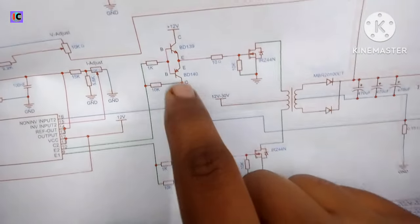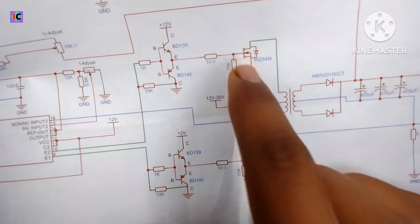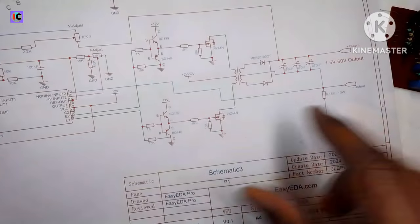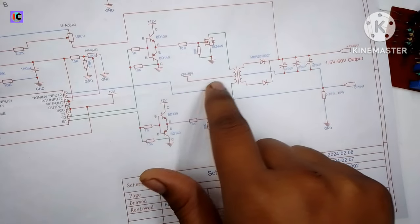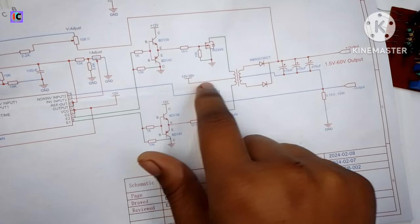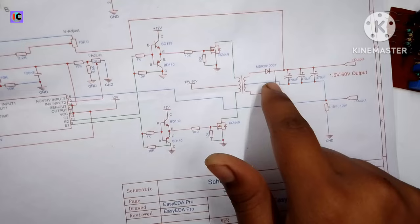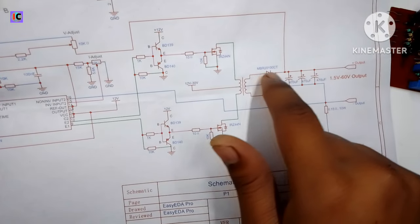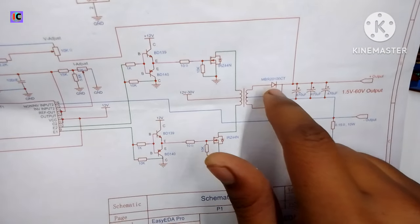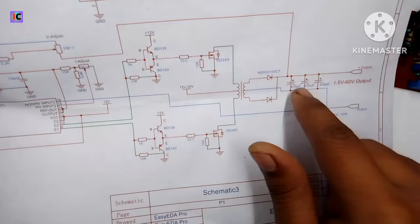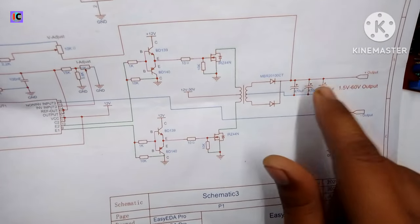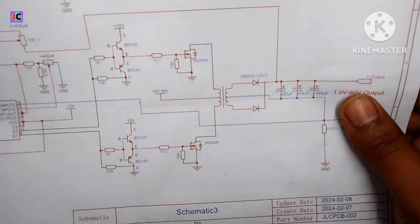Here the totem pole driver uses BD139 and BD140 transistors. Here we are driving two switches like IRF Z44N. In the next video I'm going to show you this buck and boost converter using this controller.